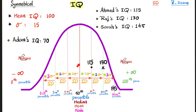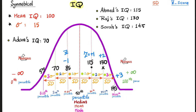Going below the mean: 100 minus 15 equals 85, which is one standard deviation below the mean. 85 minus 15 is 70 — two standard deviations below the mean. And 70 minus 15 is 55 — three standard deviations below the mean. So the z-score for 115 is positive 1, for 130 it's positive 2, for 145 it's positive 3. For 85 the z-score is negative 1, for 70 it's negative 2, and for 55 it's negative 3.